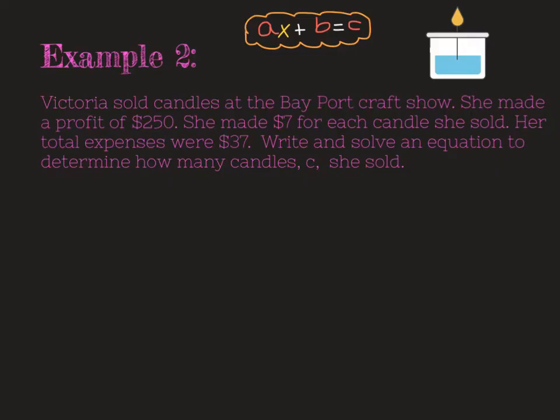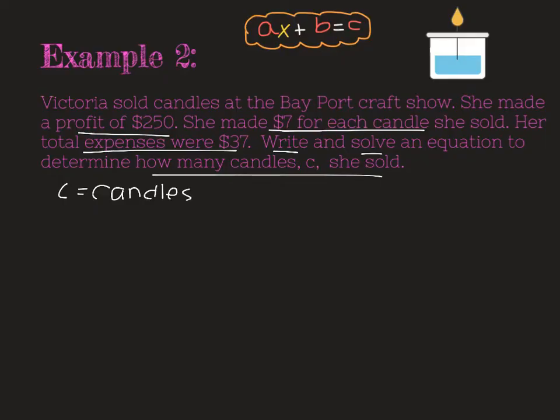All right, now it's Victoria's turn. It tells us that Victoria sold candles at the Bayport craft show. She made a profit of $250. She made $7 for each candle that she sold and her total expenses were $37. We're being asked to write and solve an equation to determine how many candles she sold. And we're being told to use C for the number of candles. So I'm just going to go ahead there and define my variable.